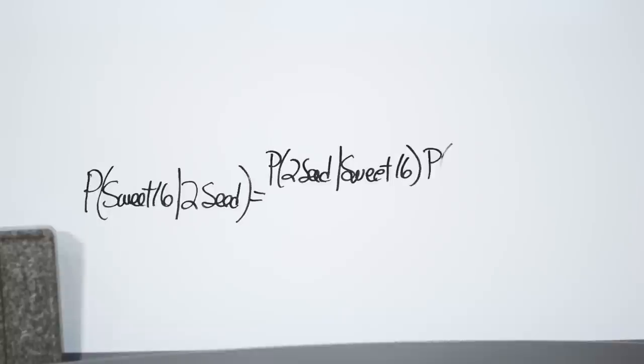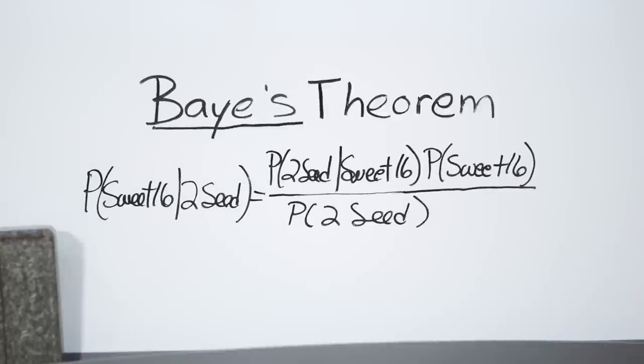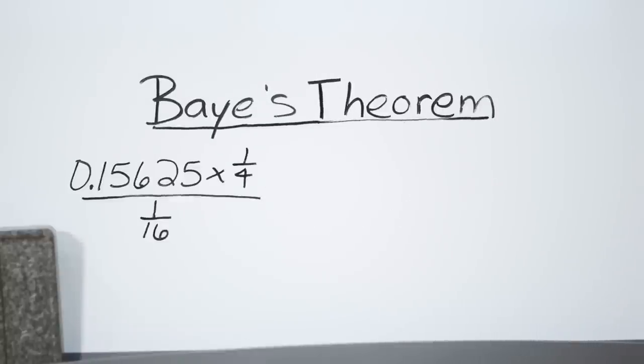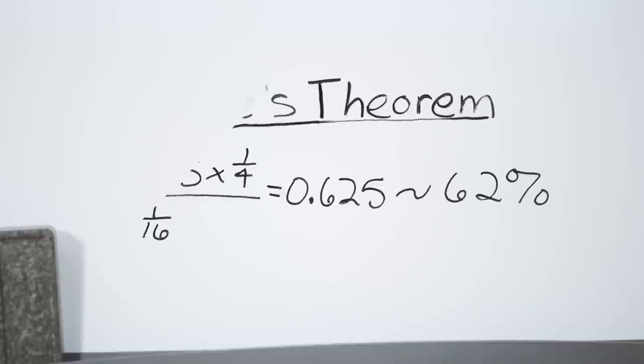But once they get there, the odds of winning it all depends on who else advances. We can calculate their chances with a method called Bayes Theorem, which predicts a future event conditioned on known information or a past event.